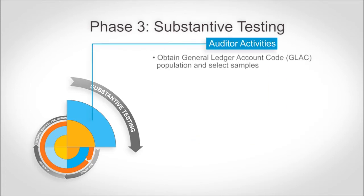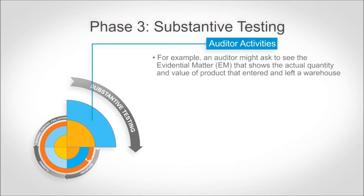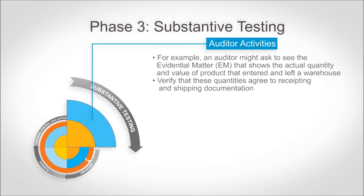Auditors will use test procedures to verify the assertion of financial transactions and balances in the general ledger account codes — selecting a sample of transactions, requesting the associated evidential matter, and comparing the evidential matter to the transaction. Using the distribution example, an auditor might ask to see evidential matter showing the actual quantity and dollar value of product that entered and left a warehouse, verifying inventory quantities agree to receiving and shipping documentation and that dollar values agree to original purchase prices via contractual and other pricing documentation.